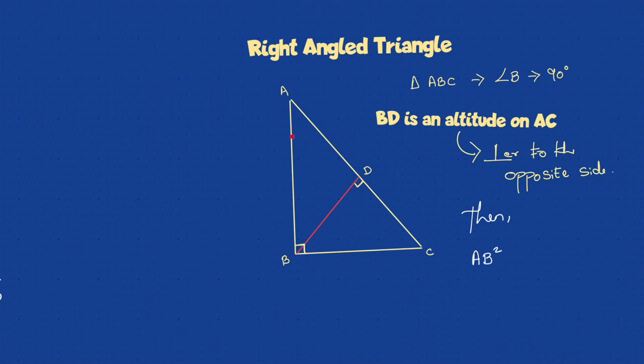Then what will happen? AB square will be equal to AD into AC. AB square equals AD, just a part, and the full part AC. Similarly, BC square will be equal to CD into AC. BC square, one side square, is equals to part of the hypotenuse CD and the full hypotenuse AC. Then you will have BD square, which is altitude square, equals AD into CD.